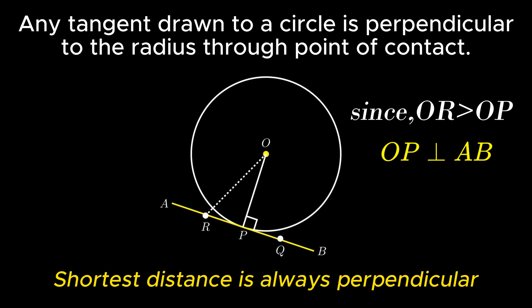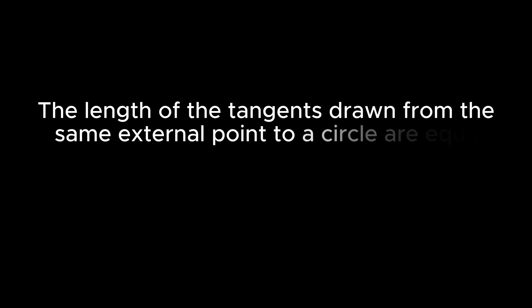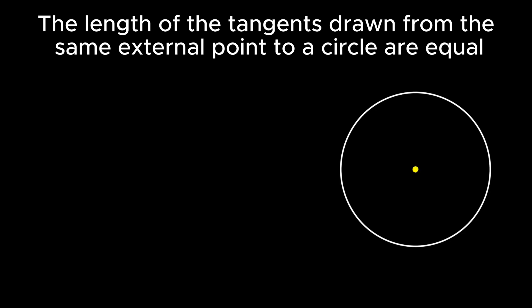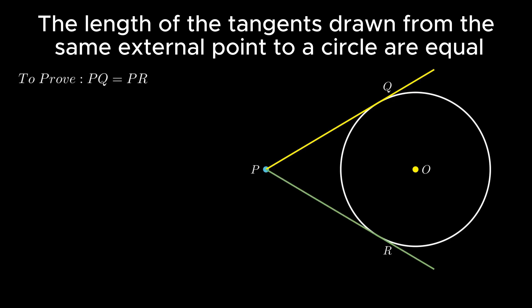Moving on to the next theorem: Theorem 2 states that the lengths of the tangents drawn from the same external point to a circle are equal. Consider a circle with center O and an external point P. Two tangents PQ and PR are drawn from this external point. To prove: length of tangent PQ equals length of tangent PR. Join external point P to the center of the circle O.